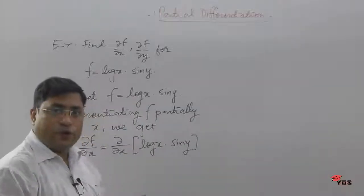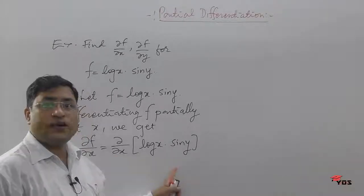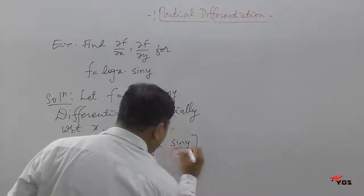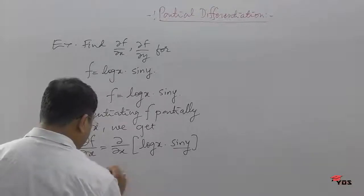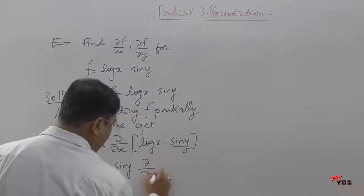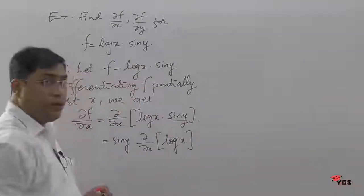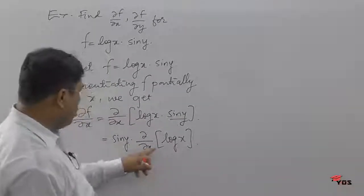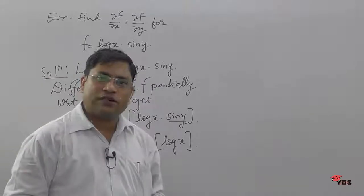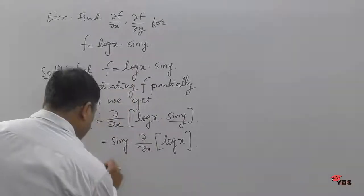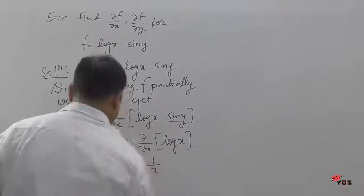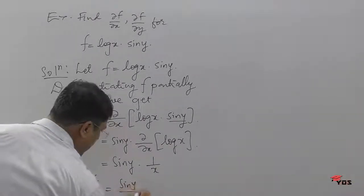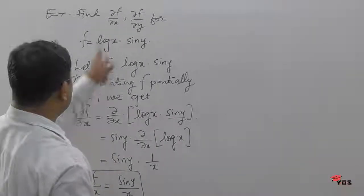We need to understand one thing: when we are differentiating with respect to x partially, y is treated as a constant, so sin(y) will be treated as a constant. Hence this equals sin(y) times ∂/∂x of log(x). Since the derivative of log(x) is 1/x, the derivative becomes sin(y) times 1/x. So the first order partial derivative of f with respect to x is sin(y)/x.